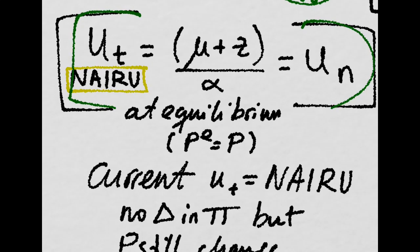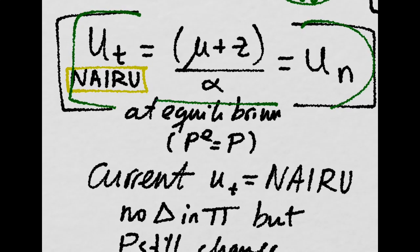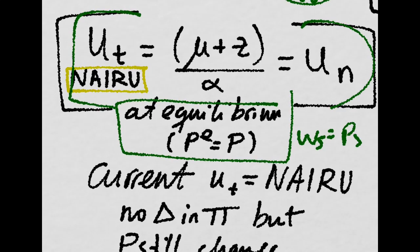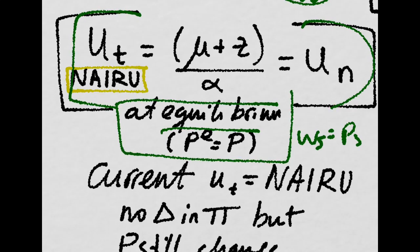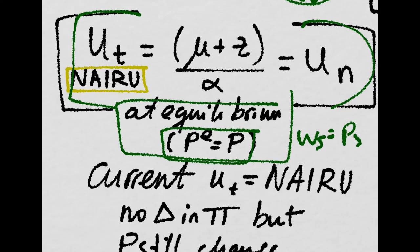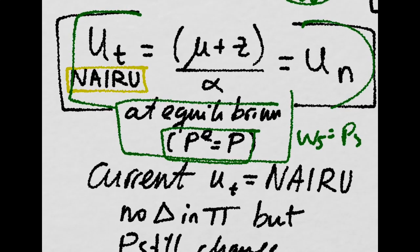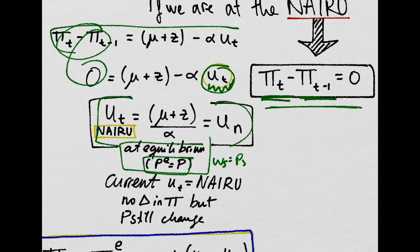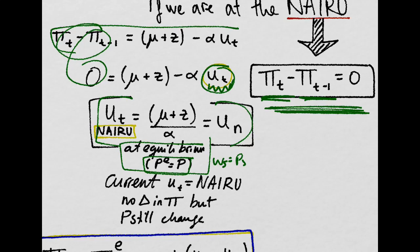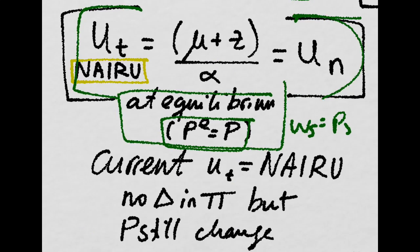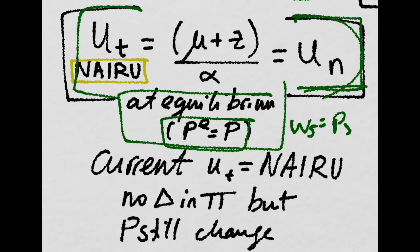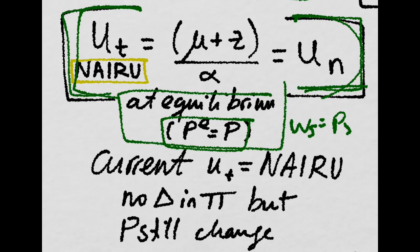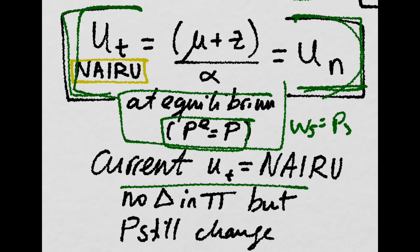So, since we are at an equilibrium in the labor market, meaning wage setting equals price setting, we know that this holds. And at this specific unemployment rate, which gives the non-acceleration of inflation, when the natural unemployment rate is equal to the NAIRU for some years, then there will be no change in the inflation rate.